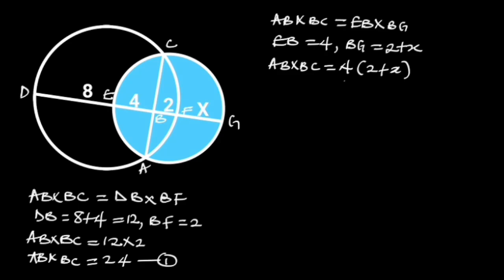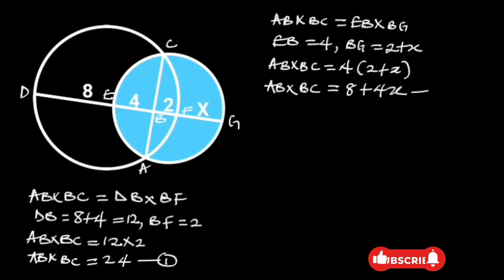Simplifying the right side will give us 8 plus 4x. So AB times BC is equal to 8 plus 4x. Let this be equation 2.